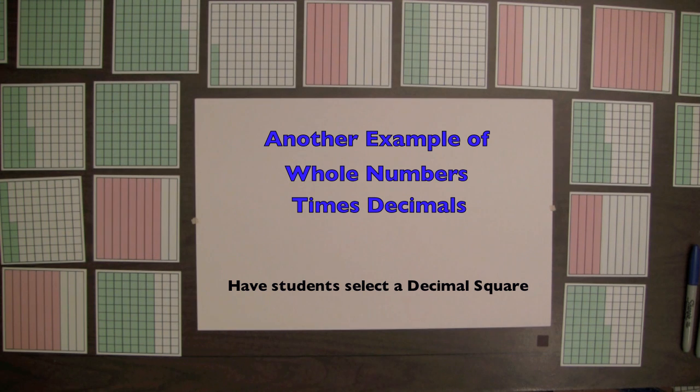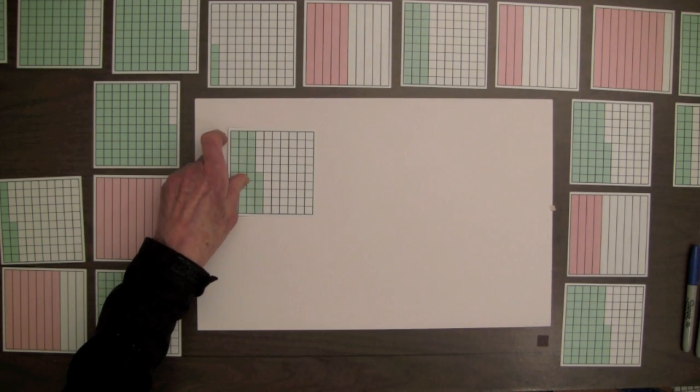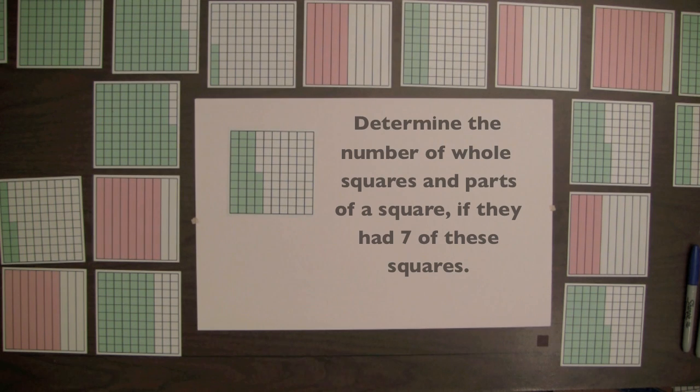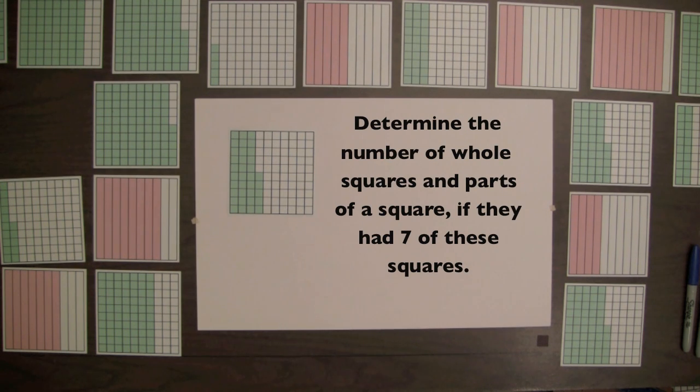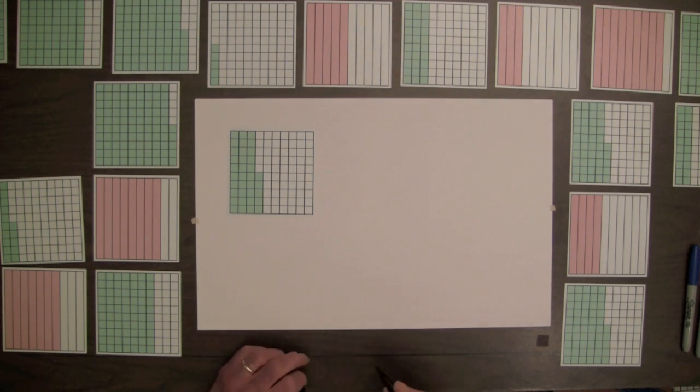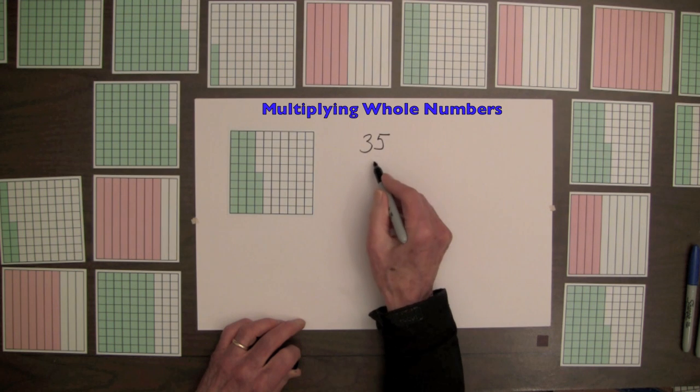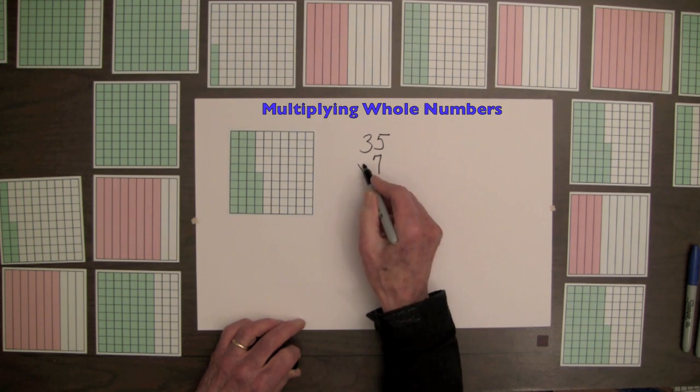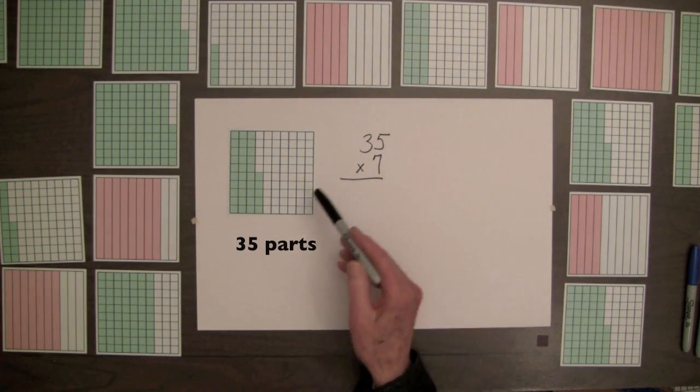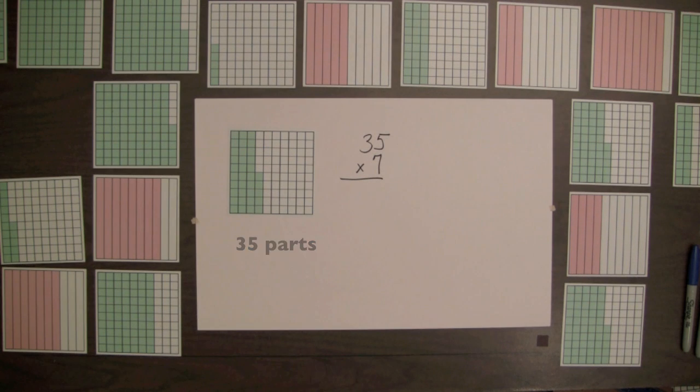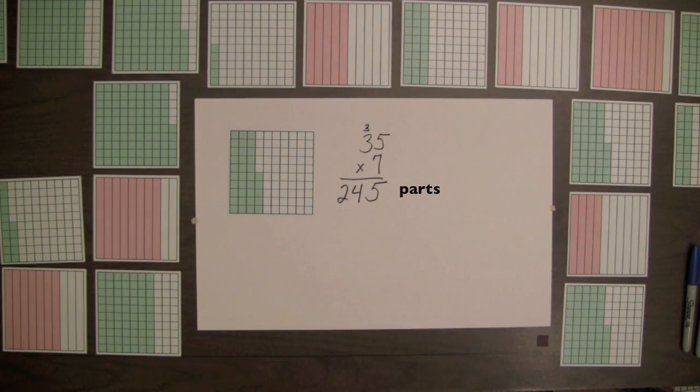Have students select a decimal square, for example 35 hundredths, and determine the number of whole squares and parts of a square if they had 7 of these squares. One approach is to multiply by 7. 7 times the 35 parts of the square equals 245 parts.